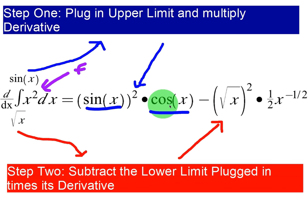Step two is to subtract the lower limit plugged in times its derivative. It's basically the same as step one except with the bottom limit. Don't forget your subtraction sign—this in the middle will always be minus. That comes from Fundamental Theorem Part 1: big F of B minus big F of A. The lower limit is √x, which we're going to plug in.